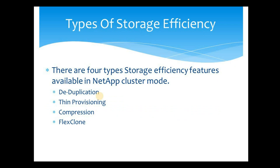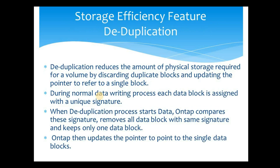Deduplication reduces the amount of physical storage required for a volume by discarding or removing duplicate blocks and updating the pointers to refer to a single block. For example, suppose you are sending a mail to 100 users with an attachment — every user will download that attachment and store it in a shared folder. In this way, a single file is kept in the same share multiple times, which is not efficient. This is where deduplication comes into picture.